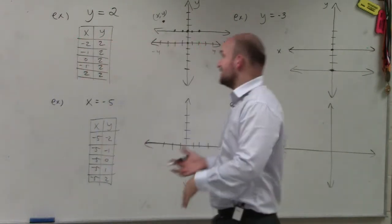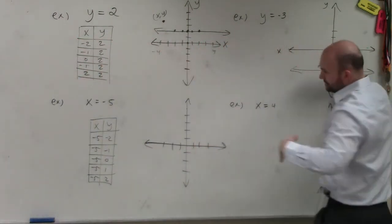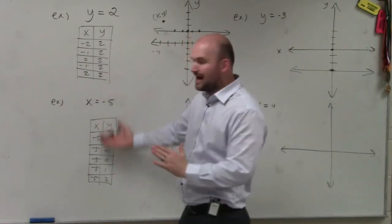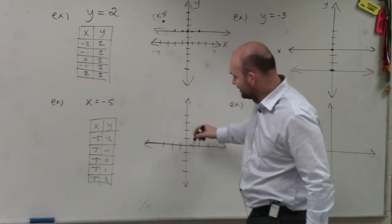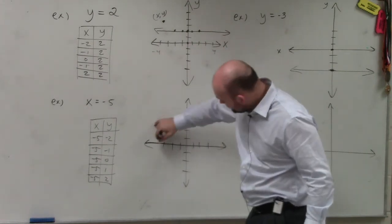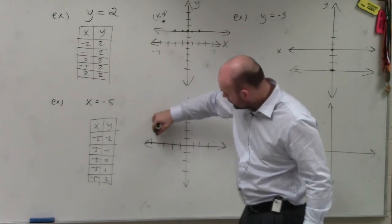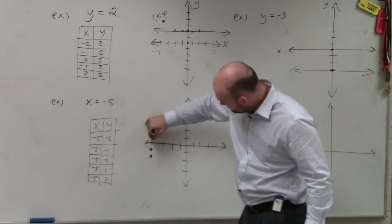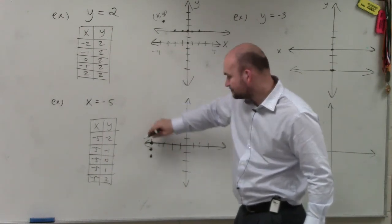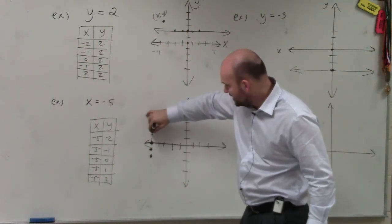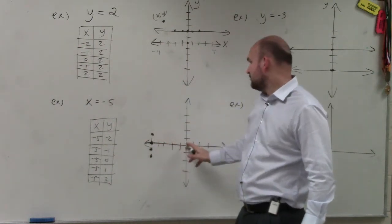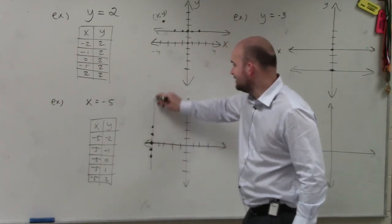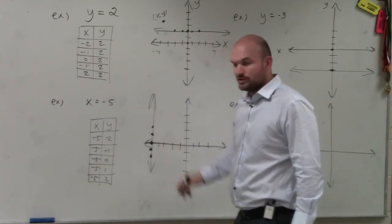And you could also kind of reason with this. Because if y equals a number produces a horizontal line, then x produces a number is going to be a vertical line. But let's plot this graph. Let's plot this table to see. So 1, 2, 3, 4, 5. So when x equals negative 2, negative 5. Negative 1, negative 5. 0, 5. When y equals 1, x equals negative 5. When y equals 2, x equals negative 5. So you guys can see, this produces a vertical line.